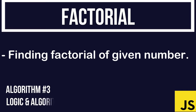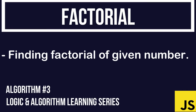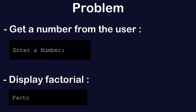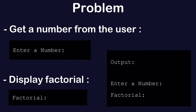Hello everyone, welcome to the algorithm series. In this video we are going to solve the factorial problem — where you have to get a number from the user and display its factorial. The program will run something like this: when you run it, it will say 'enter a number', the user enters 4, and the output is '4 factorial is equal to 24'.